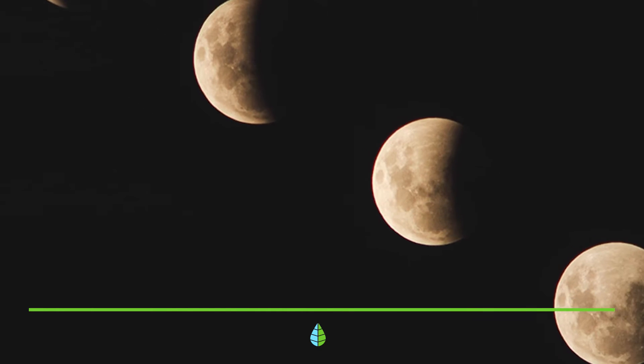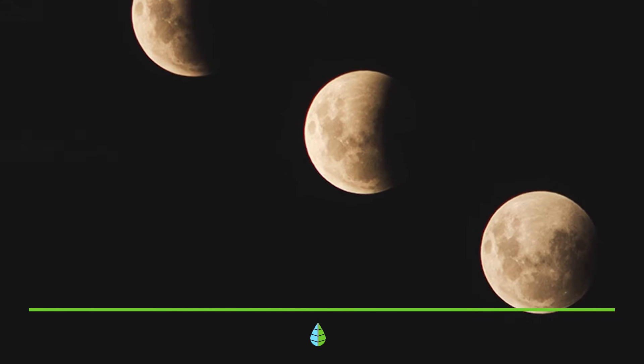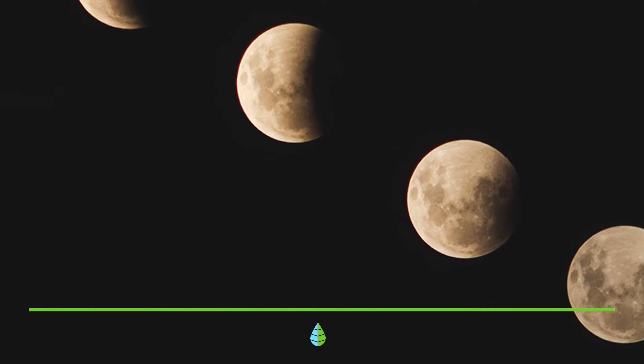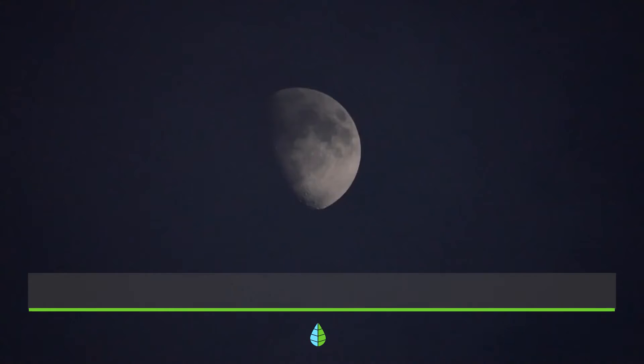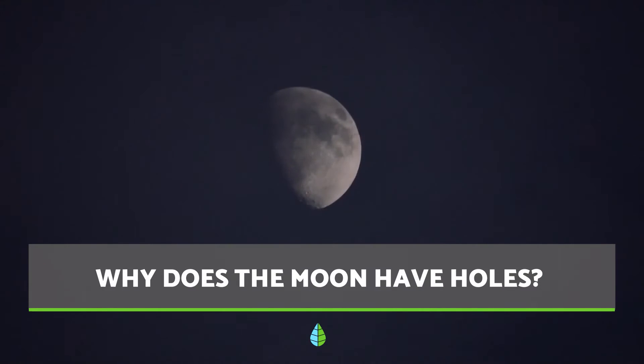The full cycle goes: new moon, first quarter, full moon, last quarter, new moon. But why does the moon have holes?